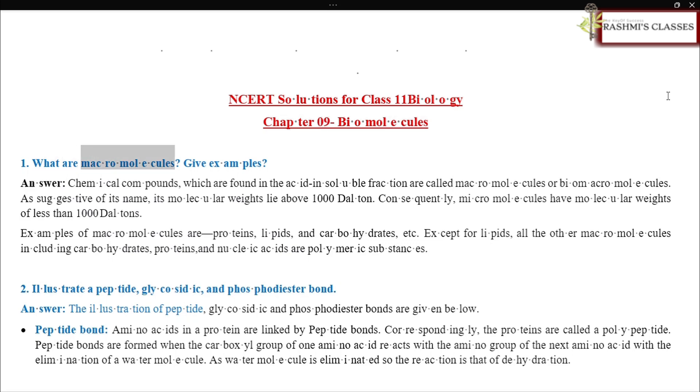What are macromolecules? Give examples? Answer. Chemical compounds which are found in the acid-insoluble fraction are called macromolecules or biomacromolecules. As suggestive of its name, its molecular weights lie above 1,000 Dalton. Consequently, micromolecules have molecular weights of less than 1,000 Dalton.